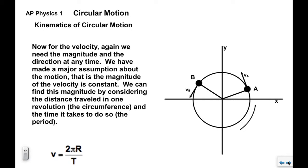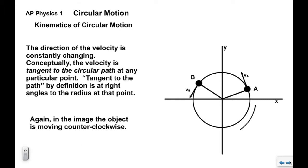As far as velocity goes, we need to describe it in terms of a magnitude and a direction at any particular time. We've made a major assumption: the magnitude of the velocity is constant since we're dealing with uniform circular motion. We can find the magnitude by considering the distance traveled in one revolution — the circumference — and the time it takes, which is the period. So the formula for the magnitude of velocity is v = 2πR/T, and this applies at any time.